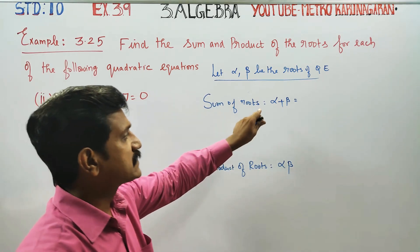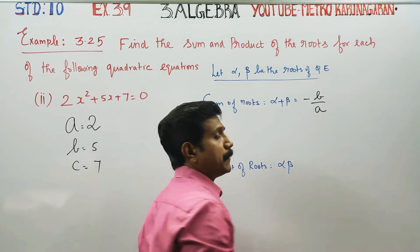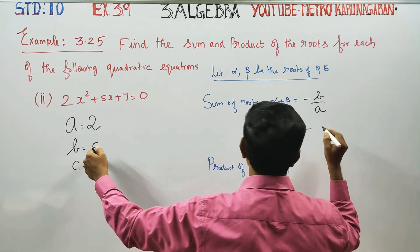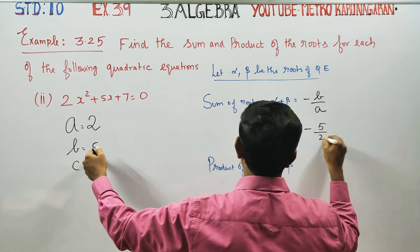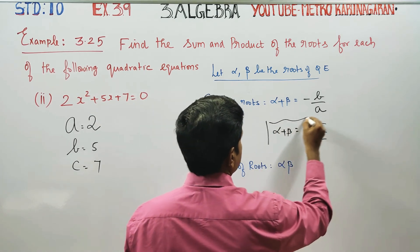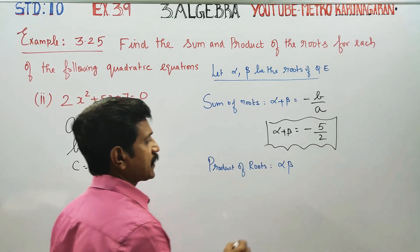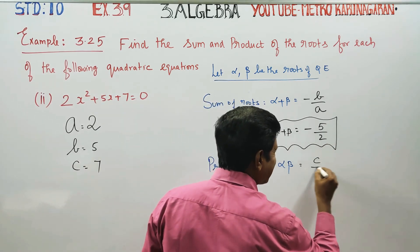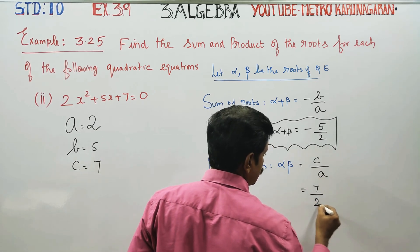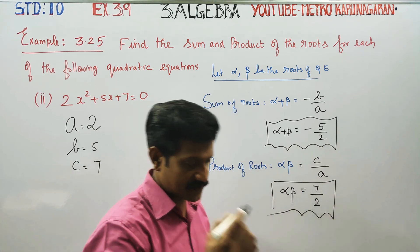Now let's go. Sum of the roots special formula: minus b by a. Sum of the roots formula: minus of b — that is 5 — by 2, so this fraction is your alpha plus beta, the first sum answer. Product of the roots: alpha into beta equals c by a. What is your c? 7. What is your a? 2. Therefore your alpha into beta is 7 by 2, which is your final answer. Thank you.